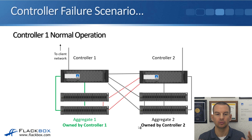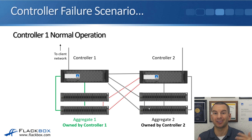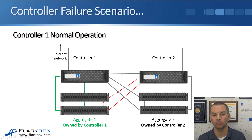Let's have a look at our controller failure scenario, starting off with normal operation. Here we have a two-node cluster with aggregate one owned by controller one, and aggregate two owned by controller two. Both controllers are connected to each other's disk shelves with SAS cables. Our disks and therefore our aggregates are always owned by one and only one controller — even if there is an HA event. The other connection shown in the diagram directly between the two controllers is the HA connection, which is used for NVRAM mirroring of the data and also for keep-alives.